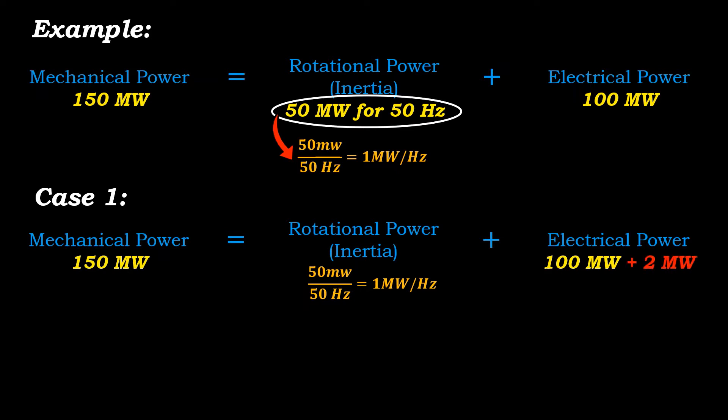Now consider Case 1, when suddenly the power demand increases by 2 megawatts. Now load being the constant power load will try to suck the extra power from the grid to fulfill the additional requirement of 2 megawatts. Usually the increase in demand is satisfied by increasing the mechanical input power.